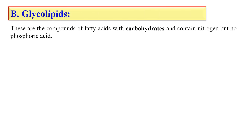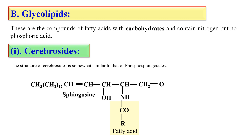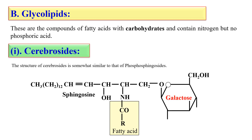Next, glycolipids. This is the second category of compound lipids after the phospholipids. Glyco means carbohydrates, so glycolipids contain a carbohydrate molecule in their structure. These are further of the following types: cerebrosides, which contain fatty acid, sphingosine, and either glucose or galactose. As you can see here, the sphingosine molecule is attached with the fatty acid, and this molecule is further attached with galactose — the carbohydrate molecule.